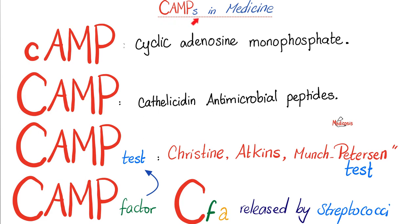Some pearls for the pros: CAMPs in medicine. There is cyclic AMP with a lowercase c, and there are three CAMPs: cathelicidins and antimicrobial peptides, the CAMP test, and the CAMP factor — which you can test for using the CAMP test. It stands for the persons who discovered it: Christie, Atkins, Munch-Petersen. If you remember my previous videos, the CAMP factors are released by streptococci.